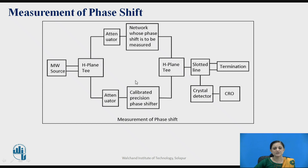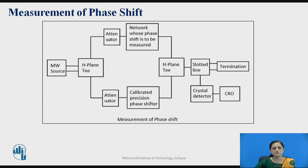This is the setup for measurement of phase shift. Here the microwave source is connected, after that it is given to the H-plane T. H-plane T is a three-port device — one port is given to the microwave source, another port is given to the attenuator, and the third port is also connected to the attenuator. From the attenuator, port 2 is connected to the block which has the network whose phase shift is to be measured, and in the second block a calibrated precision phase shifter is used. The H-plane T can be used to reconnect the signal by adding the two port signals, or it is also used to split the signal.